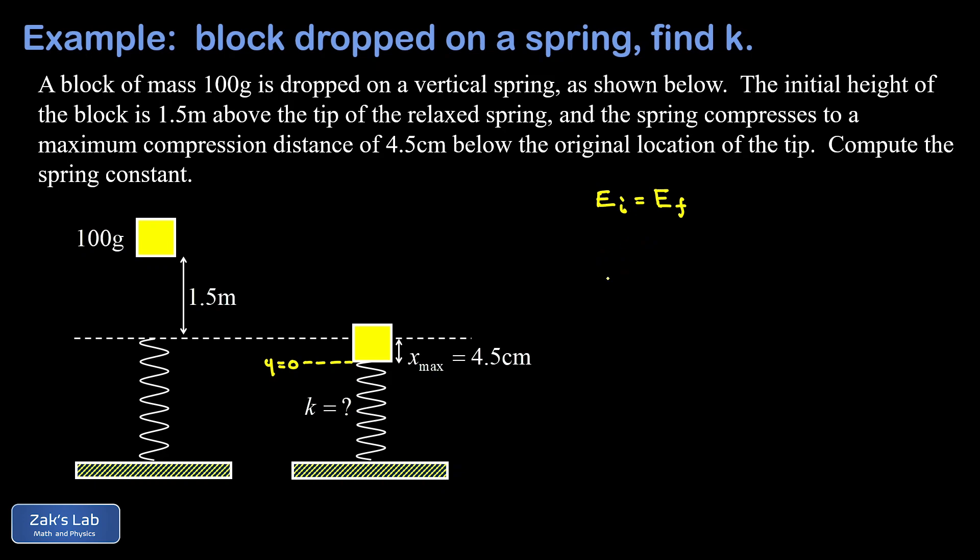In our initial state, there's no spring potential energy. All we have is gravitational potential energy, so I have mg y initial. Then in our final state, because I put the origin of the y coordinate at the location of the object in the final state, there's no gravitational potential energy because y is zero.